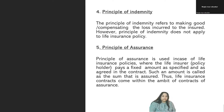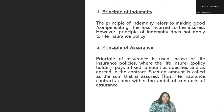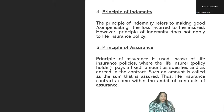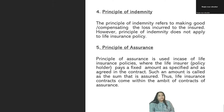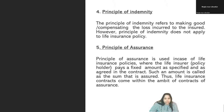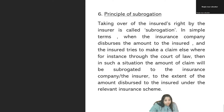So next is the principle of assurance. The principle of assurance is used in case of life insurance policies where the life insurer — that is the policy holder — pays a fixed amount as specified and as agreed in the contract. Such amount is called the sum assured. Thus, life insurance contracts come within the ambit of contracts of assurance, and when the amount is dispersed, it can be dispersed even to the beneficiary.